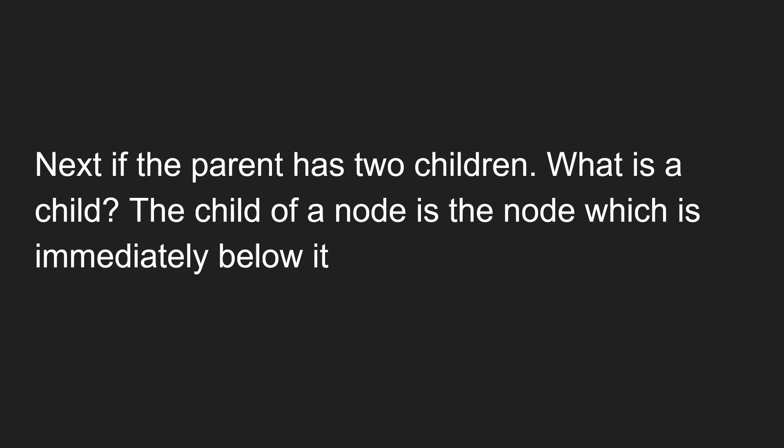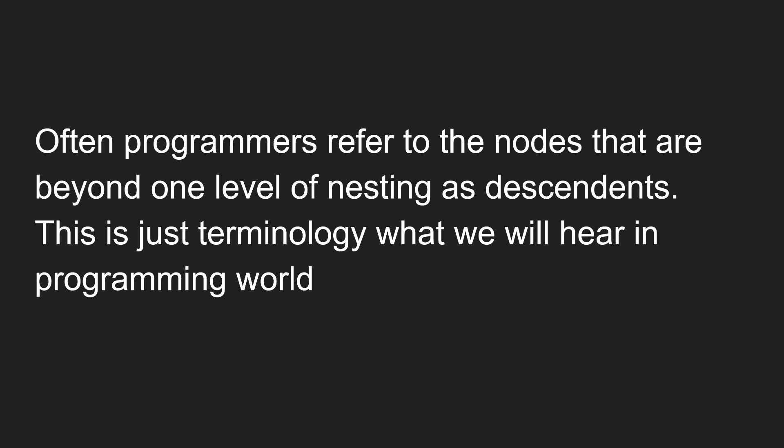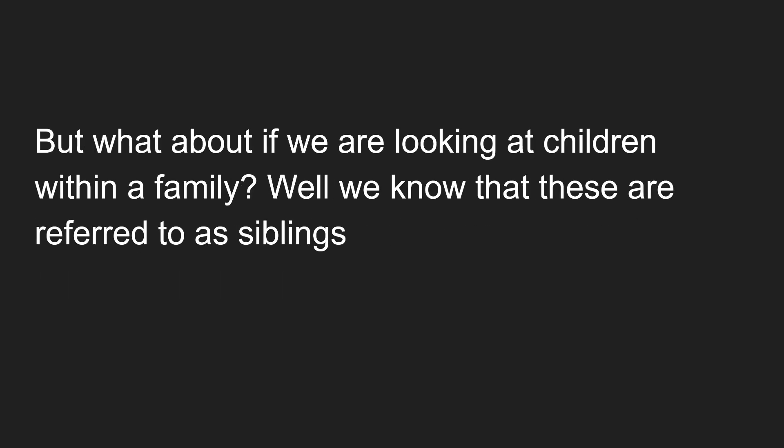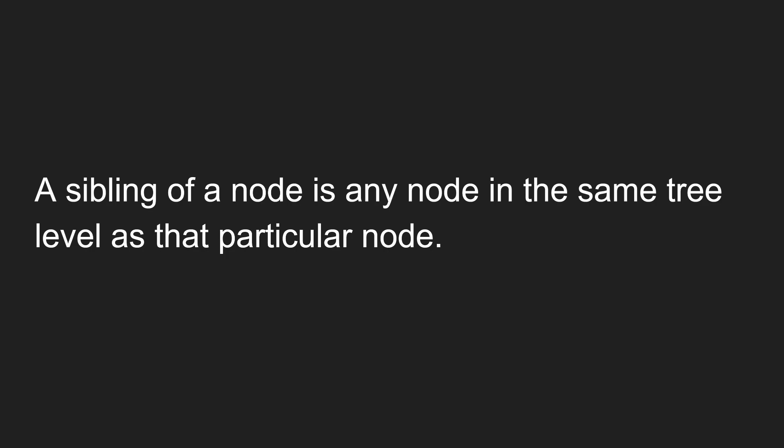If the parent has two children, what is a child in DOM terminology? The child of a node is the node immediately below it. Often programmers refer to nodes beyond one level of nesting as descendants. If children are at the same level within the DOM, those are referred to as siblings. A sibling of a node is any node at the same tree level.